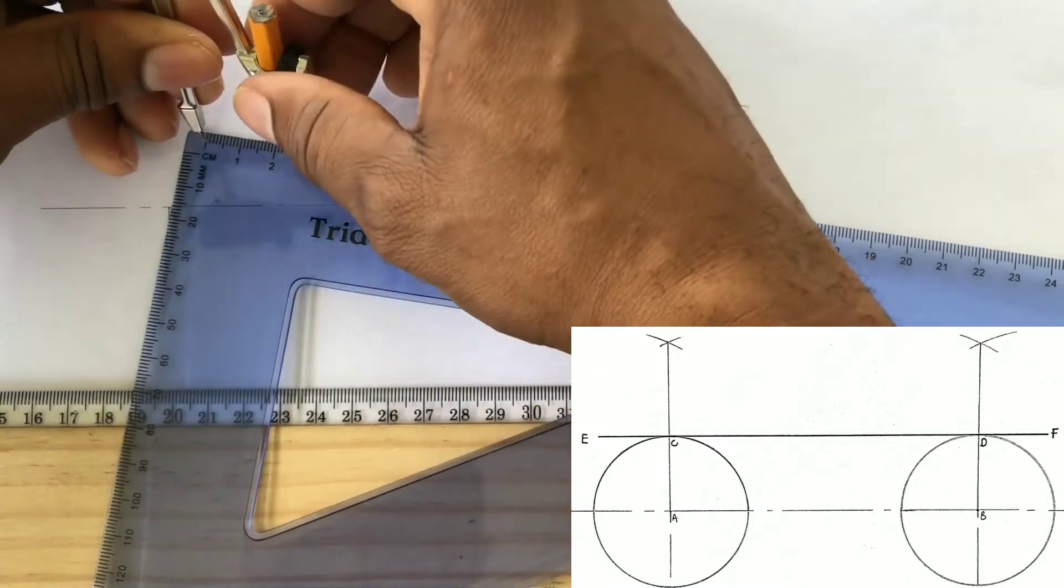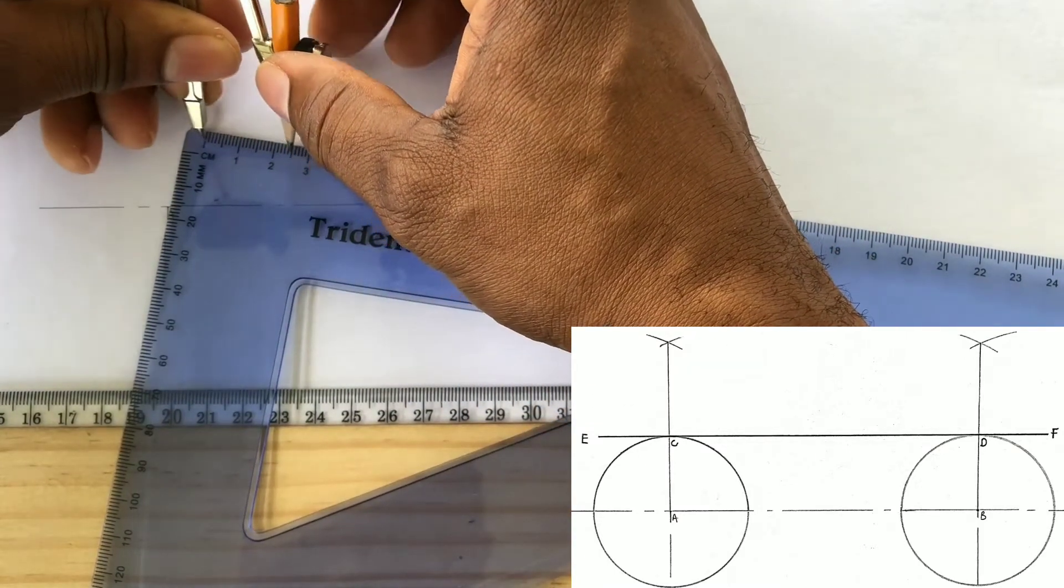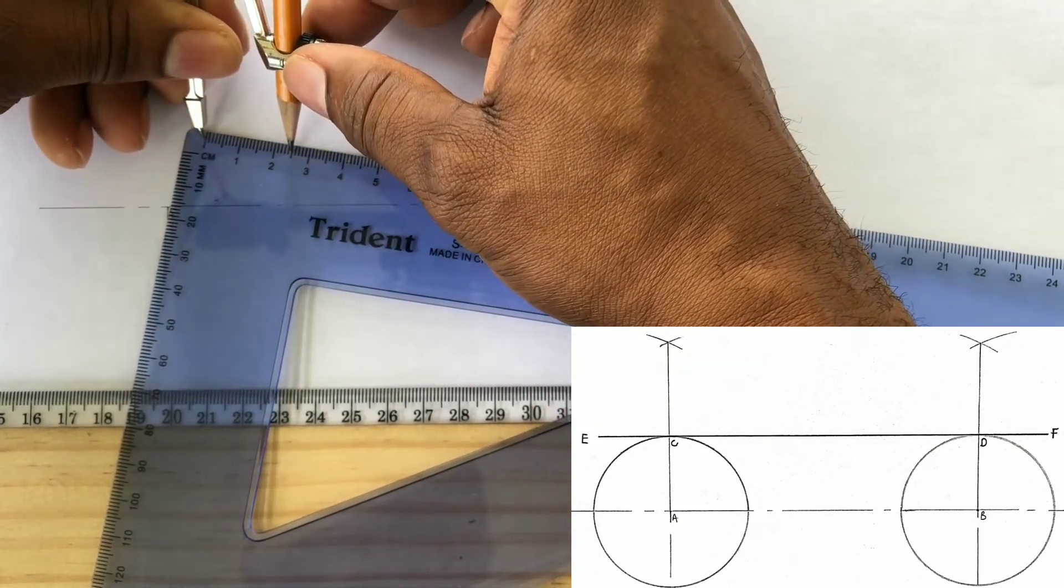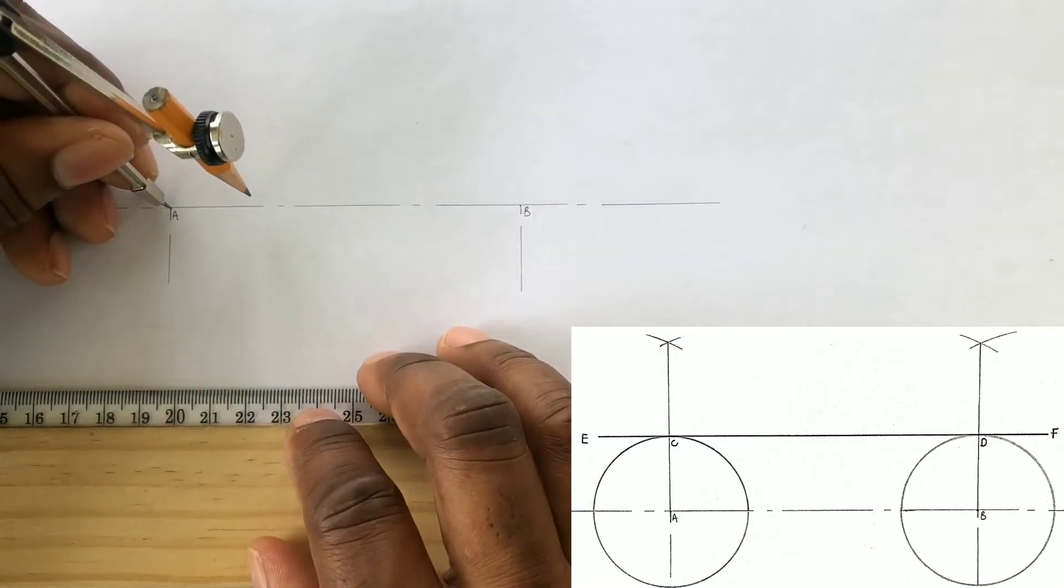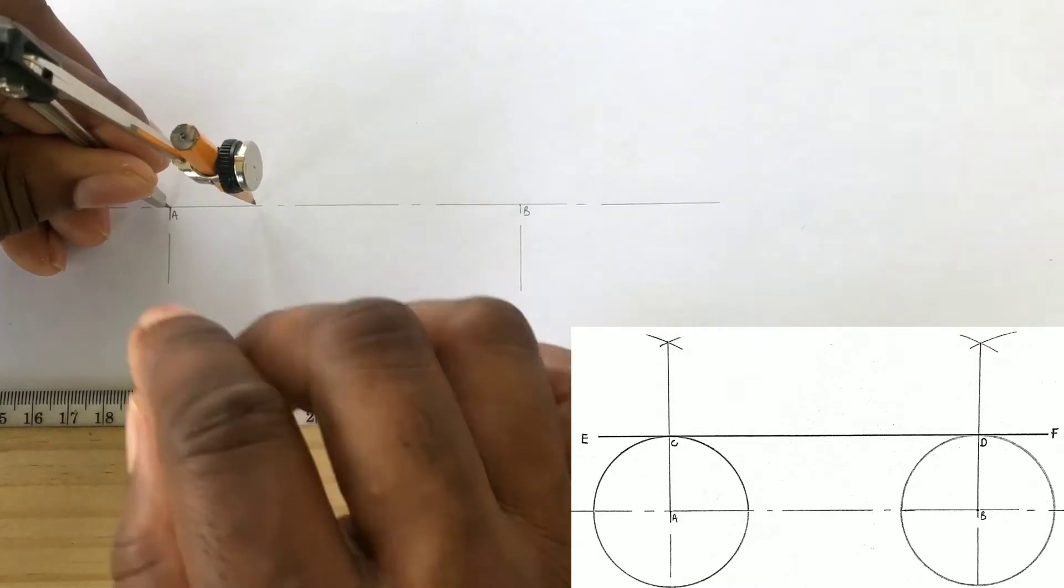We will now open our compass to a radius of 25 millimeters or 2.5 centimeters. From A, we will scribe a circle.